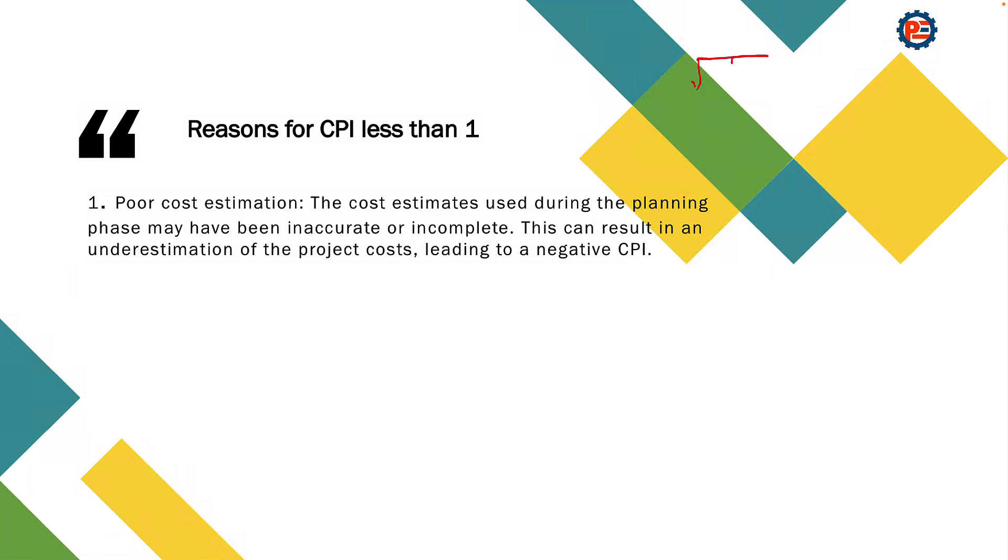For example, you estimated to execute this piece of work with one dollar, and you executed it, same piece of work, and you spent two dollars. It means that at the first place, your estimation of one dollar was not correct or was not accurate. So this is one of the reasons that the CPI could be less than one.